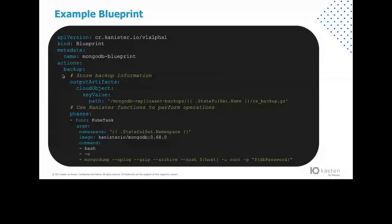The phases here show a single phase, and the Canister function called kube task is used. The function itself spawns a pod in the namespace provided, with a container image also provided, and finally executes the bash command we have provided. The command here uses mongodump to capture the data from the MongoDB replica set. This is a simple blueprint. Once we have the blueprint defined, how do you tell the controller that we want to execute a particular action from a blueprint? That's when we deploy an action set.